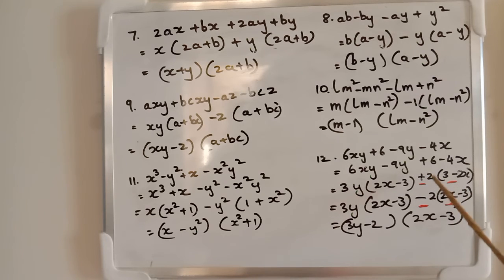So plus sign will become minus. If that becomes minus here, right? So you can change the position: (2x - 3) inside the bracket. So 3y(2x - 3) - 2(2x - 3) will give you (3y - 2)(2x - 3).